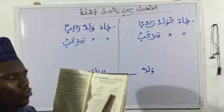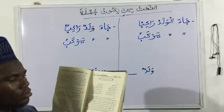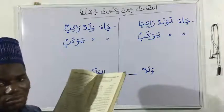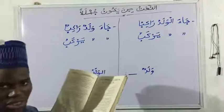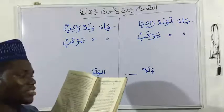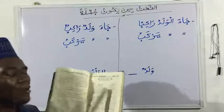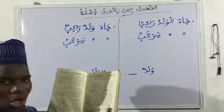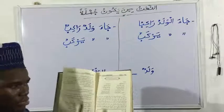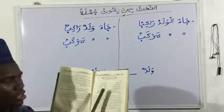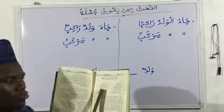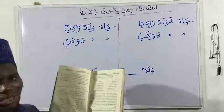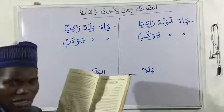Number four: mada yawmun shadidu al-harri — a day passed whose heat is severe. Yawmun is nakira. Shadidu al-harri is the sifa coming after it. They transform this: mada yawmun harru hu shadidun — a day passed; its heat is intense. Whose hotness is severe — that is, the heat belongs to that particular day.